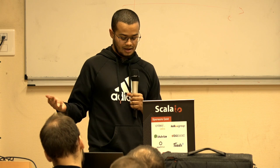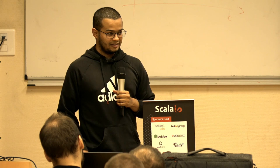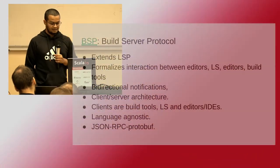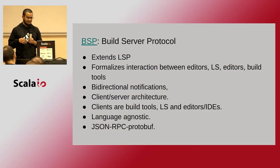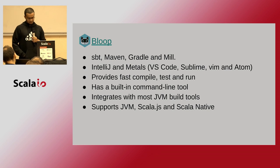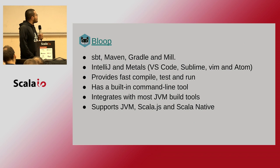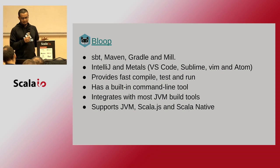Future compilations benefit from already-computed information that hasn't changed, so you always get incremental compilation. Bloop — the BSP implementation — works with your favorite build tool: SBT, Gradle, Mill, even Fury. It connects with Metals to bridge your build server with whichever editor you are using.